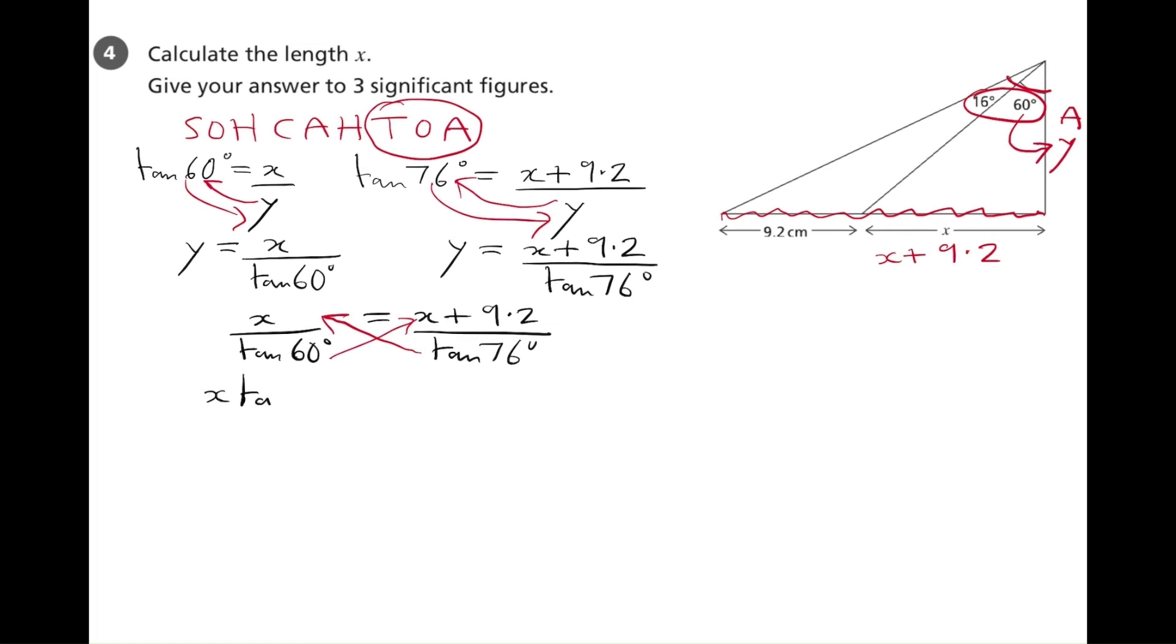So, we have x tan 76 is equal to x plus 9.2, the whole side multiplied by the tangent of 60. We now need to expand the bracket. So, x tan 76 is equal to x multiplied by tan 60 plus 9.2 multiplied by tan 60. We need x on its own, so we subtract the tan 60 from both sides, so that all the x's are on the left-hand side of the equation.